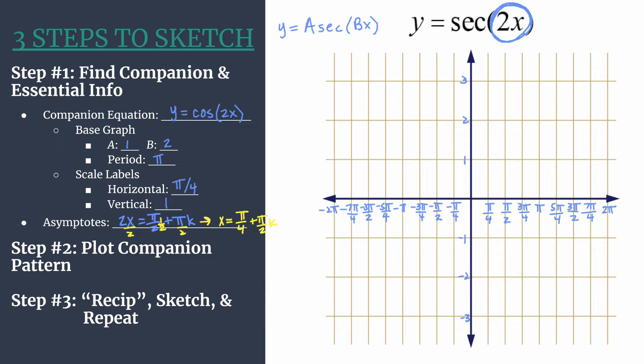Remember, when we're looking at asymptotes equations, you may have seen this in previous videos on sketching tangent graphs, k is simply an integer, and as you plug in different values for k, you'll get different asymptotes along the graph.